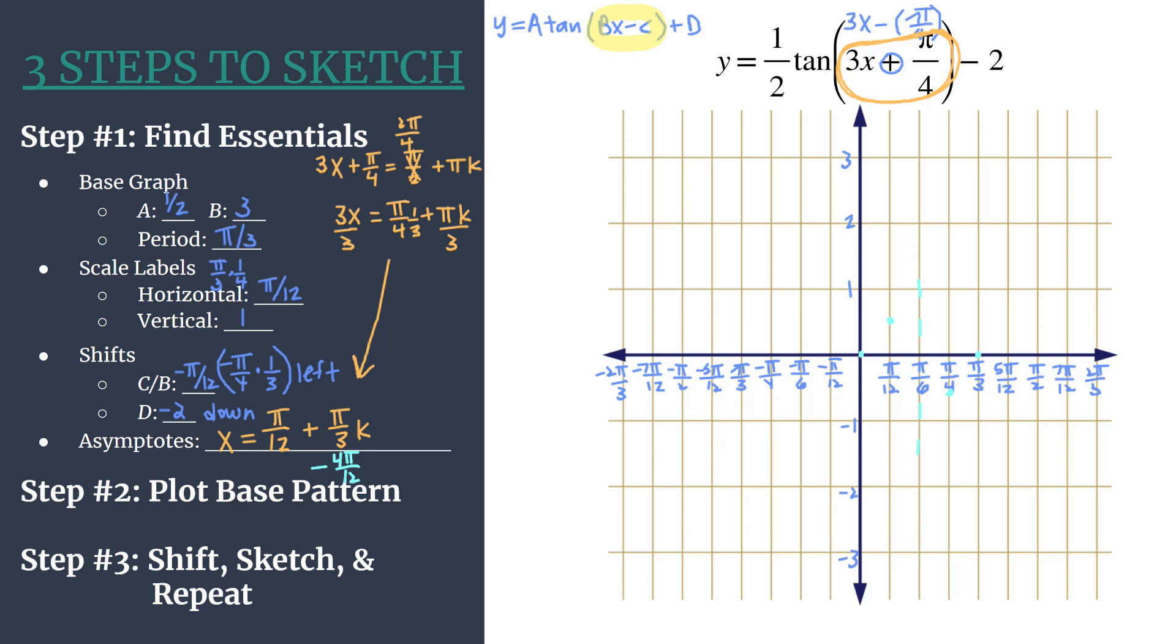Now we're ready for step 3, where we shift, sketch, and repeat. Switch to the color that you're going to use for your final graph. I'll be using green. Or if you're just marking lightly versus dark, make sure to mark these points very dark. This will be your final graph. It'll be your first cycle. Working from your intermediate graph, working from the light blue points, all we have to do is apply our shifts.